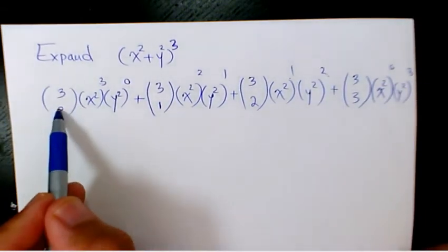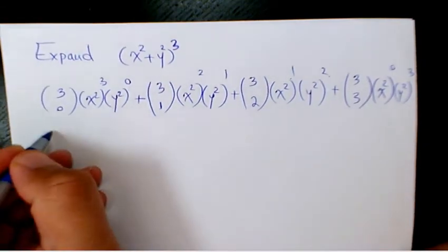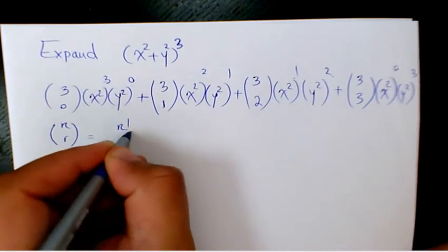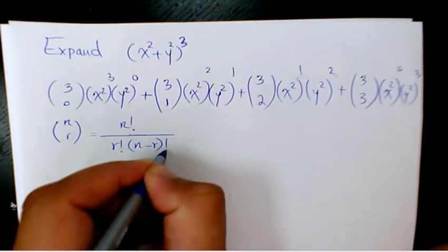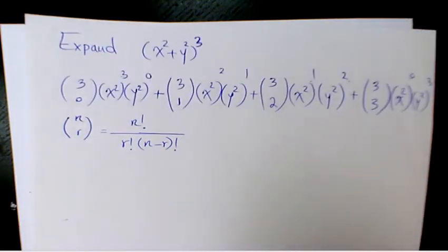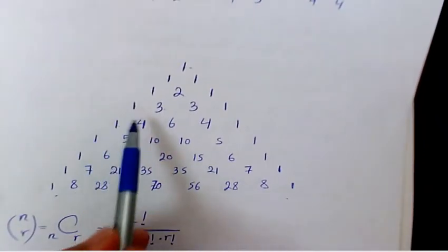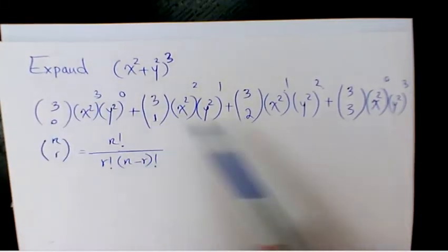How do we find 3 choose 0, 3 choose 1, 3 choose 2, 3 choose 3? The formula is n choose r = n! / (r! · (n - r)!). Or you can use Pascal's triangle. When you use Pascal's triangle, the numbers for the third row are 1, 3, 3, 1 — these are the binomial coefficients.